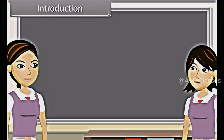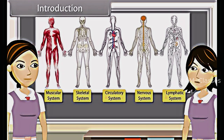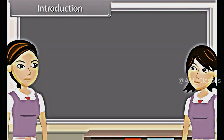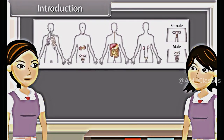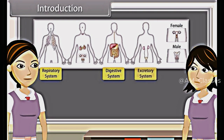As we already know, the body of higher animals like man is formed of a number of organ systems. Some of the examples are digestive system, respiratory system, circulatory system, excretory system, etc.